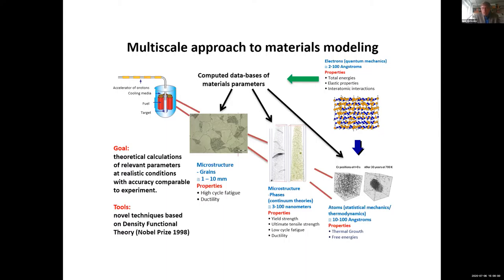The idea is that at all these steps, parameters need to be provided. In many cases parameters are taken from the blue sky — sometimes available experimentally, but very often experimental information is limited or not complete. I argue that theoretical calculations can be used to get these parameters, and this can be done with density functional theory.